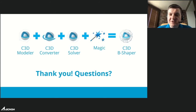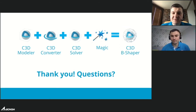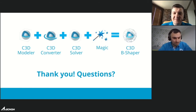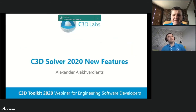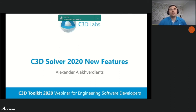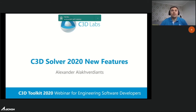Let me introduce Aleksandr Avakhverdians, leading developer of C3D Solver, our parametric constraints solver. My name is Aleksandr. I will present new features of C3D Solver, but first a brief preview of C3D Solver capabilities. The first task is two-dimensional parametric sketching — C3D Solver allows putting different logical and dimensional constraints on 2D curves, doing degrees of freedom analysis, and provides powerful drag-and-drop functionality. We also have a JavaScript wrapper covering almost the full 2D solver functionality.